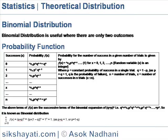Random variable x is an integer where p = constant probability of success in a single trial, q = 1 - p, as p + q = 1, q is the probability of failure, n = number of trials, x = number of successes in n trials.